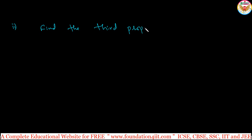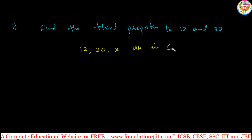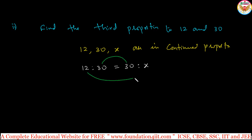Second question: find the third proportion to 12 and 30. The first and second are 12 and 30, and the third proportion is x. So 12, 30, x are in continued proportion. Since these three are in continued proportion, the ratio of the first two terms equals the ratio of the last two. Using the rule — product of the means equals product of the extremes — 12 into x equals 30 into 30.